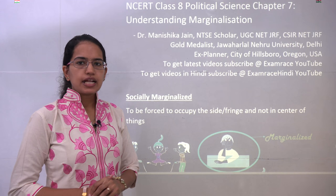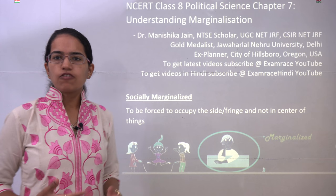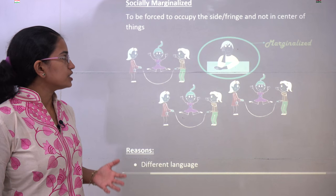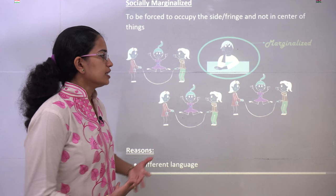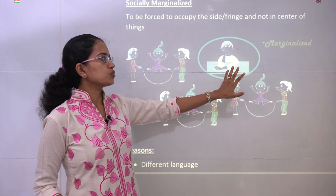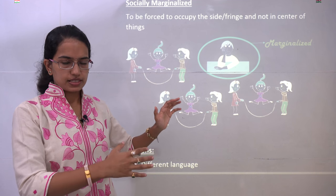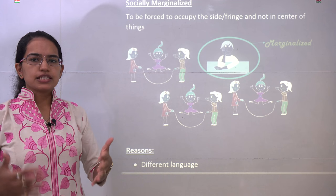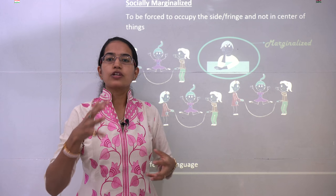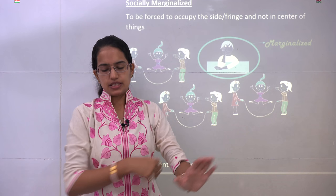Welcome. We will start with NCERT Class 8, Chapter 7, which talks about understanding the idea of marginalization. When we talk about marginalization, first understand what we mean by the term 'marginalized.' If you have numerous students playing along and one student who is not mixing up with the group, we say that student becomes marginalized. In simple terms, the person or group of persons who are not in the center of things and have been put to the side or fringes are marginalized.